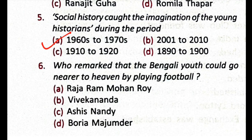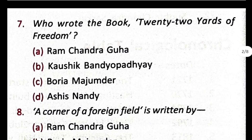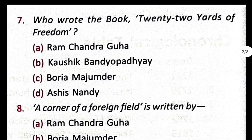Question number 6: who remarked that Bengali youth could go nearer to heaven by playing football? The correct option is B, Swami Vivekananda. Question number 7: who wrote the book '22 Yards of Freedom'?